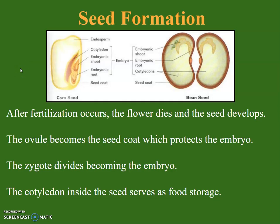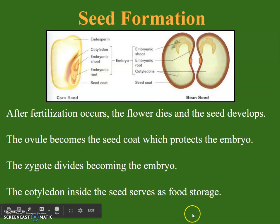After fertilization occurs, the flower will die and the seed will start to develop. The ovule will become the seed coat, which protects the embryo. The zygote then divides, becoming the embryo inside the seed. There's also a cotyledon inside the seed, which serves as food storage to give the embryo nutrients until it can perform photosynthesis.